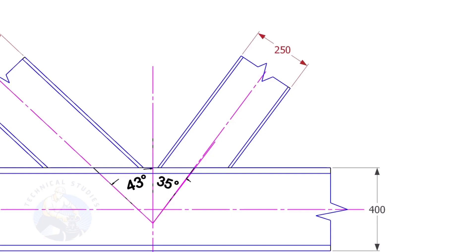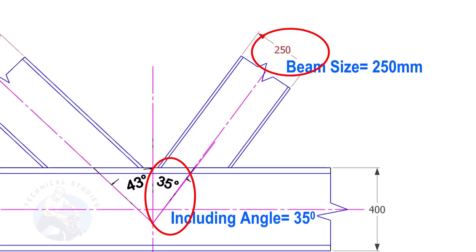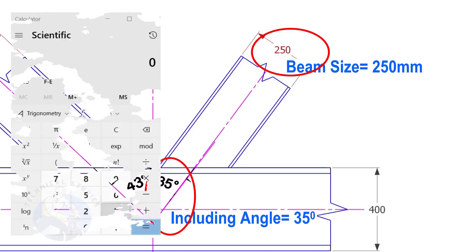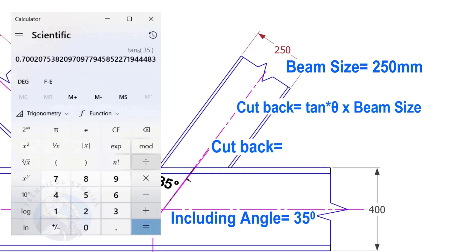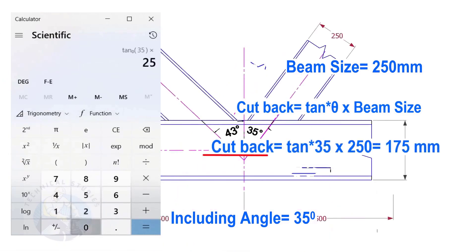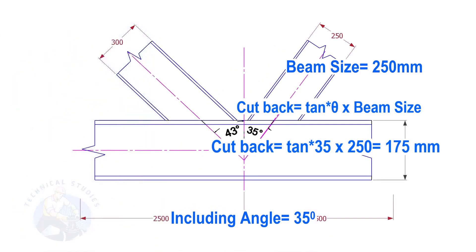Here, the size of the beam is 250 and the including angle is 35. Let us calculate the cutback. The cutback for this beam is 175 millimeters.